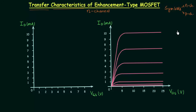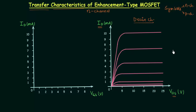If you remember the last lecture, we obtained the drain characteristics of n channel enhancement type MOSFET. You can see the drain characteristics on your screen. We will use this drain characteristics to obtain the transfer curve. In drain characteristics we have various plots between the output current ID and the output voltage VDS for various levels of input voltage VGS.